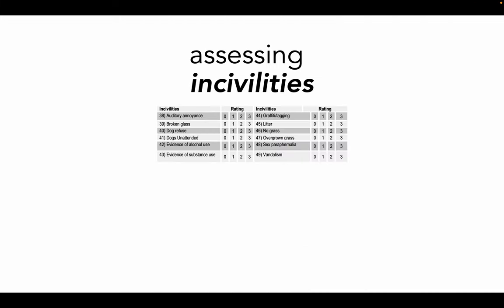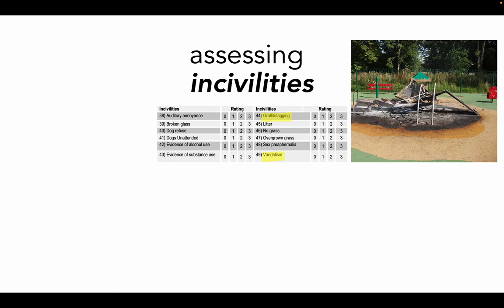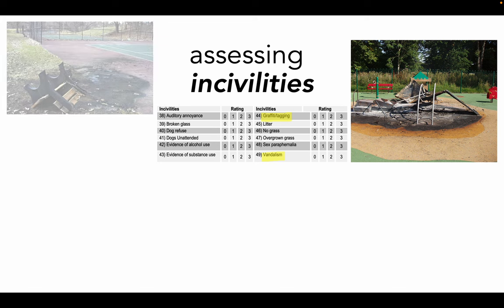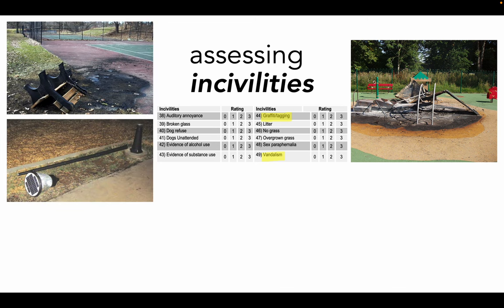In assessing incivilities, remember that you're rating the amount or extent of their presence in the resource space. PARA differentiates between graffiti and tagging and vandalism. Vandalism refers to the destruction of equipment, amenities, or features of the resource — not just normal wear and tear like chipped paint, but something like the disassembly or removal of features or amenities. If vandalism is present, you'll rate it from 1 to 3: 1 meaning a little, it's hardly noticeable; 2 meaning some things are vandalized but it's less than half of the space; and 3, a lot, meaning it's really noticeable and most of the equipment or amenities are in disrepair or unusable because of vandalism.